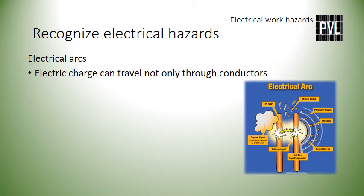Electric charge can travel not only through conductors but through the air. If voltage and current are high enough, electric charge may travel through the air and cause great damage — this is an electrical arc, or an arc flash. Electrical arcs can cause an explosion of extremely high temperature and pressure, and eject molten metal or molten material outward. Electrical arcs are extremely dangerous to persons nearby — arcs can cause blindness, severe injury, or even death.